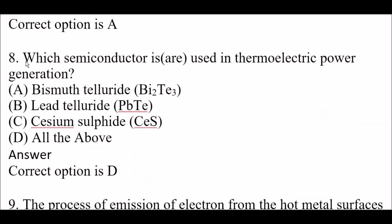Next question: which semiconductors are used in thermoelectric power generation? Option A: bismuth telluride (Bi₂Te₃). Option B: lead telluride (PbTe). Option C: cesium sulfide (CeS). Option D: all of the above. Right answer is Option D — all of the above. These are the semiconductors used in thermoelectric power generation.